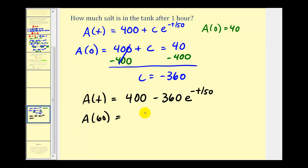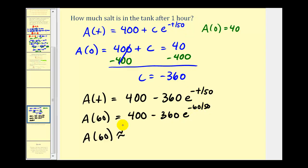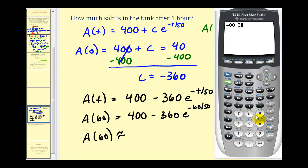We know t is in minutes because the initial flow rates were given in gallons per minute. So the exponent is negative 60 divided by 50. Calculating this, there are approximately 291.6 pounds of salt in the tank after one hour.